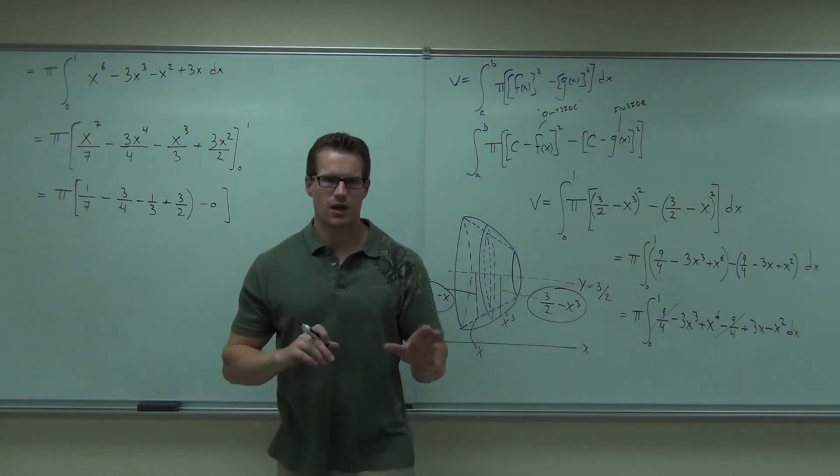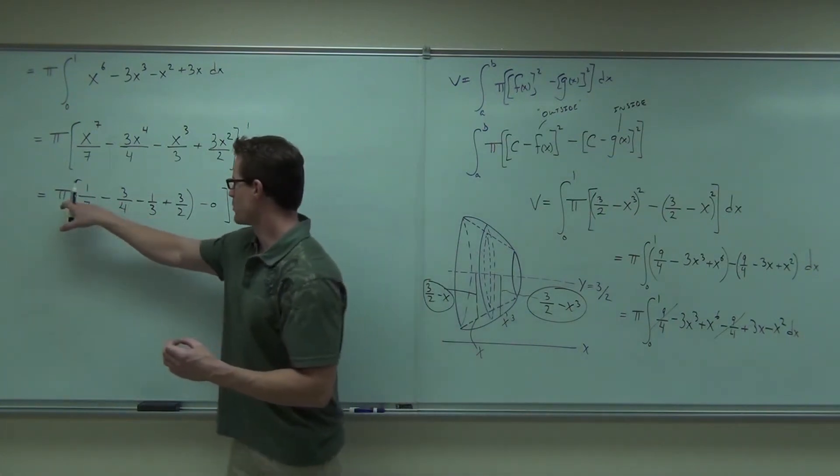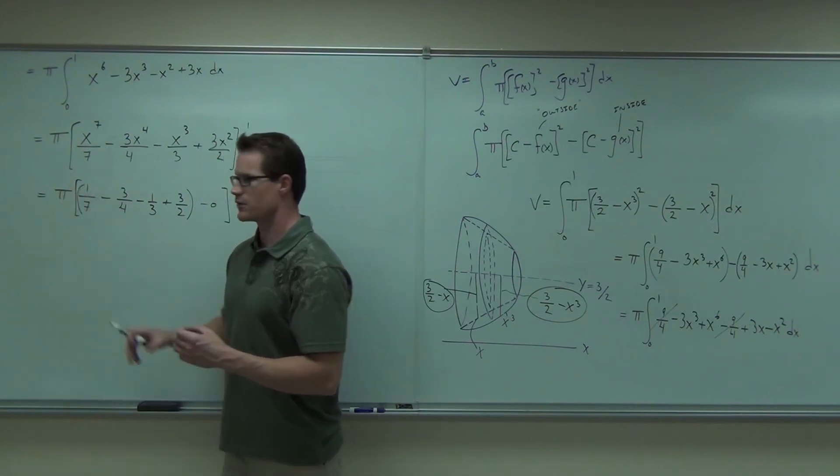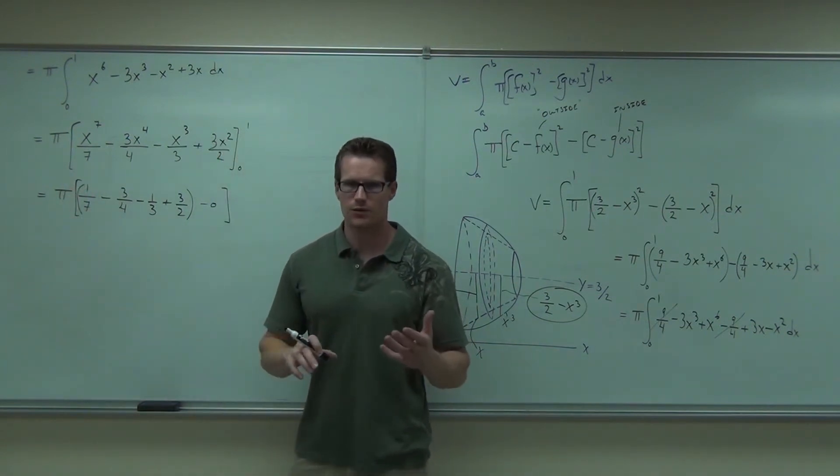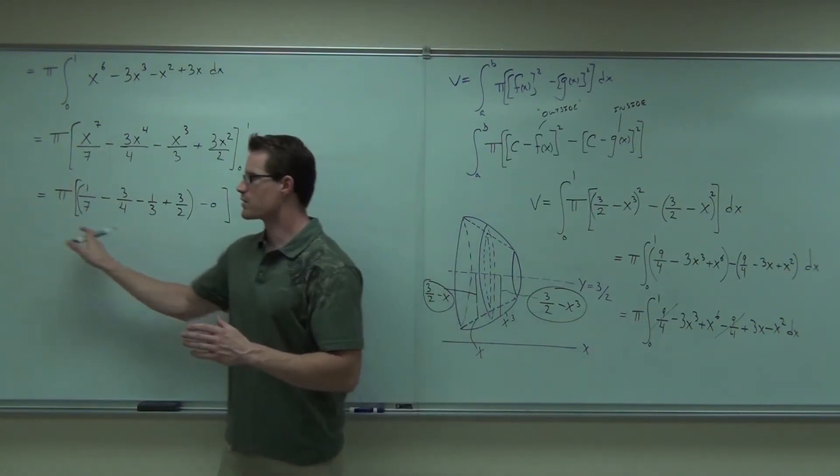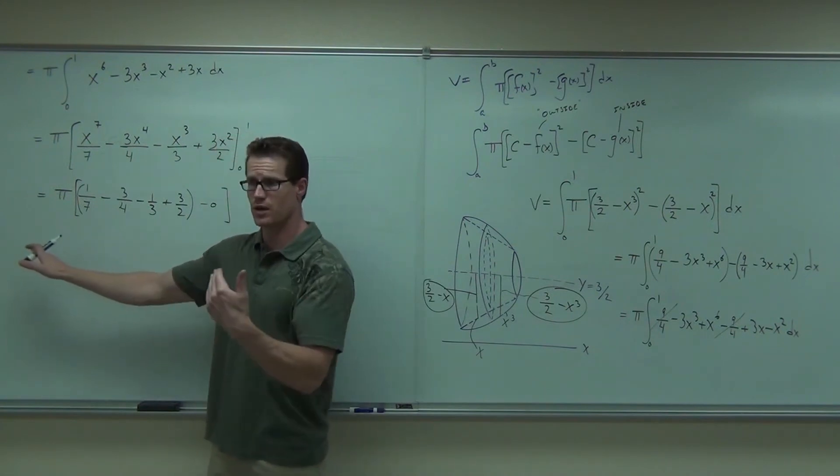Notice, please stop for a second. Notice how if the 0 had come first, it would be 0 minus all this stuff. You follow? Making it all negative. That would be the case for the other part of this, the between negative 1 and 0. You follow?